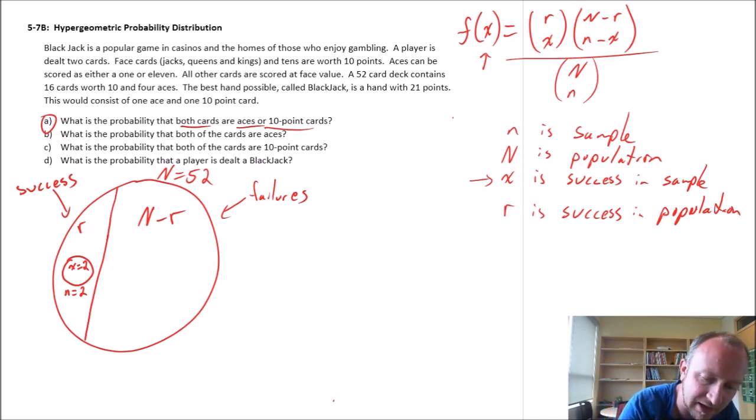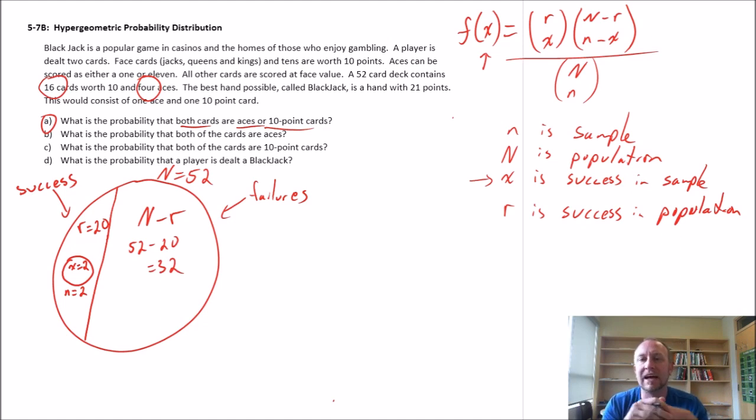So R, in this case, I'm looking at the number of successes are aces and tens. So I have 16 tens and 4 aces. So R is equal to 20. N minus R, so this is 52 minus 20, so N minus R is 32 failures as we've defined it. Those numbers will change as we progress. In my sample, no failures. So N minus X is equal to zero, because I don't want any failures. I want both of my cards to be defined as a success.